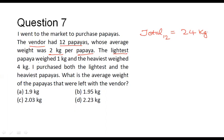The lightest papaya weighed 1 kilogram, the heaviest one weighed 4 kilograms. It is given in the question. I purchased both the lightest and the heaviest papayas. So we can see that the total weight of the papayas that is getting sold out, that corresponds to 4 plus 1, that is equal to 5 kilograms.